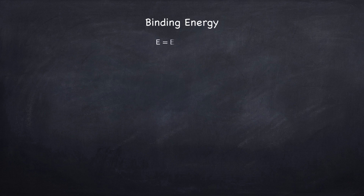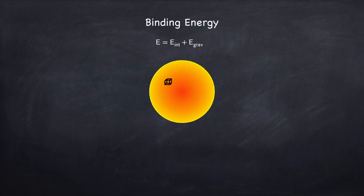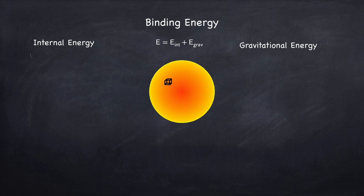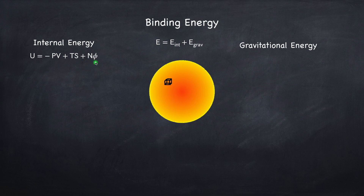Now let's calculate this binding energy. We have to find the internal energy and the gravitational potential energy. Let's say we have a star, and inside we have some small volume of mass — it will have internal energy and gravitational potential energy. Let's first take a look at the internal energy, which we found already in Stellar Physics 2a. Just to remind you: u is the internal energy, p is the pressure, v is the volume, t is the temperature, s is the entropy, n is the number of particles, and phi is the chemical potential for each particle.